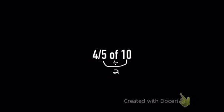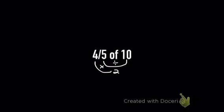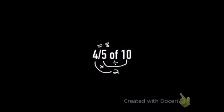So, 10 divided by 5 equals 2. Now what we do is 2 times 4 equals 8. So, our final answer is 8.